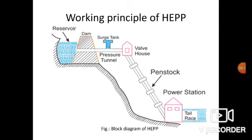A pressure tunnel is placed between the reservoir and the valve house, and water comes from the reservoir to the penstock through this tunnel. An automatic controlling switch gate is placed in the valve house to control water flow to the power station and to cut off supply of water in case the penstock bursts. The penstock is a huge steel pipe in which water is taken from the valve house to the turbine. A surge tank is also provided just before the valve house for better regulation of water pressure in the system.